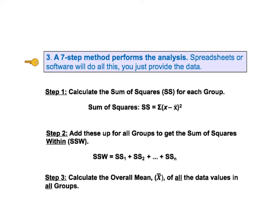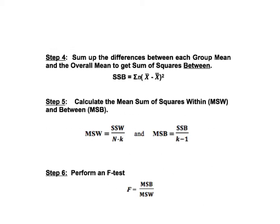KTU number three says that there is a seven-step method that the ANOVA analysis performs, usually done by spreadsheets or software. In step one, the sum of squares is calculated for each group. In step two, the sum of all these sums of squares, SSW, is the sum of squares within. In step three, the overall mean X-double-bar — the mean of all data values in all groups — is calculated. In step four, we sum up the differences between each group mean and the overall mean, multiplied by N, the number of values in that group, to get the sum of squares between, SSB.